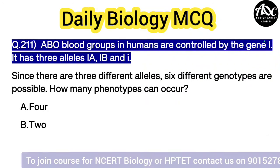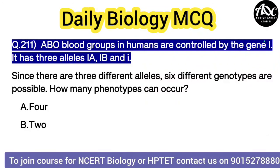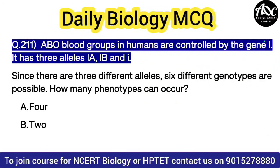Hello everyone, welcome to Rive Online classes. This is Praveen here. Today's MCQ is: ABO blood groups in humans are controlled by the gene I.